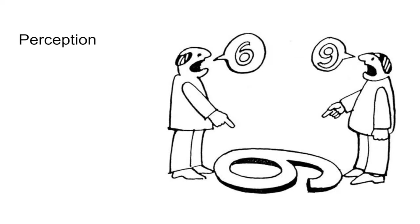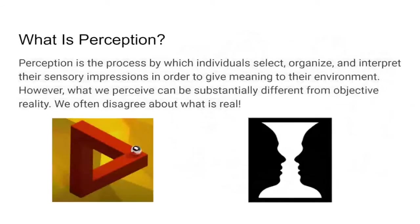The value of different perspectives means we get a better analysis of problems. Perception is really the process by which individuals select, organize, and interpret their sensory impressions. Sensory impressions refer to what you can see, what you can hear, what you can touch, what you can taste — these are your senses, and the whole purpose of our sensing is to give us some meaning to our environment.